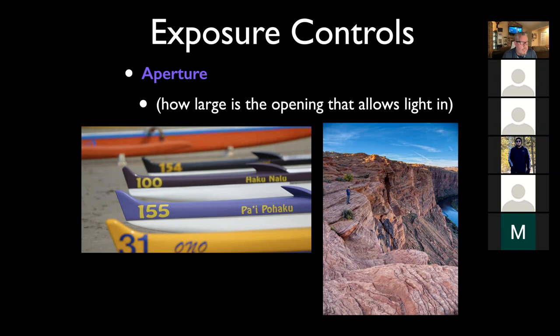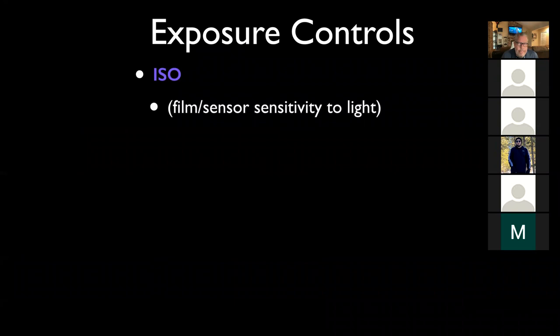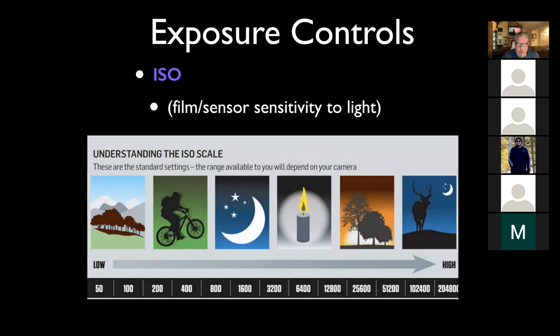The next control is ISO. This is the tricky one that is sometimes a little baffling. There's a sliding scale for what our ISO or sensitivity is. We want to have different settings for different lighting situations. Some cameras don't always have low numbers - the lowest you might have is 200, and that's okay. Nothing wrong with that. Every camera is a little bit different.